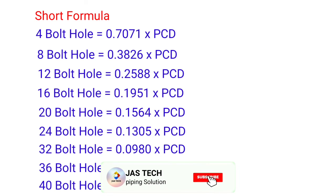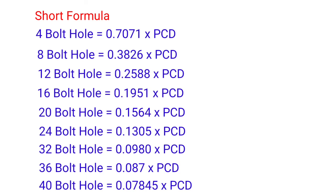Short formula to find out chord length: if 4 bolt holes, the formula is 0.7071 into PCD. If 8 bolt holes, 0.3826 into PCD. If 12 bolt holes, 0.2588 into PCD.